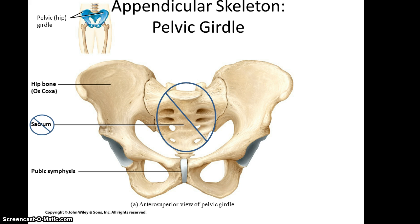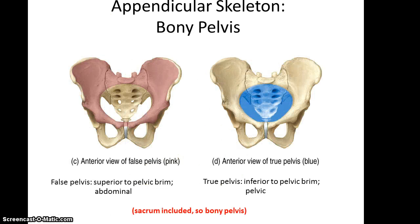The pelvic girdle consists of the two hip bones, or pelvis, also known as the os coxae. They are connected by the sacrum, where they attach to the axial skeleton, and by the pubic symphysis, which is a disc of fibrocartilage. However, the sacrum is not part of the pelvic girdle. The bony pelvis is different — in that case the sacrum is included.